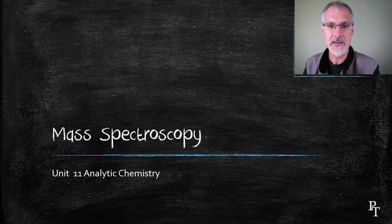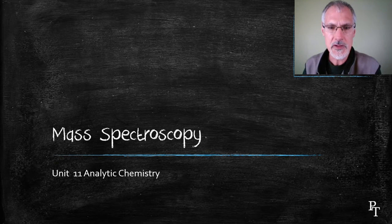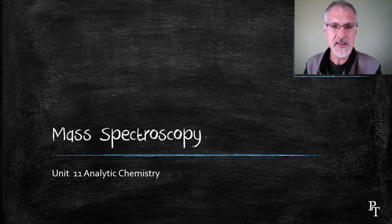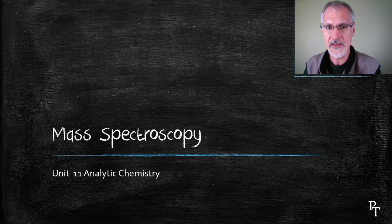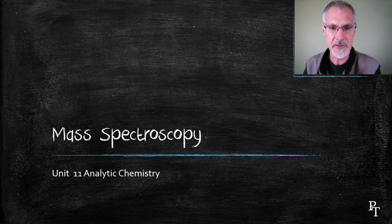Mass spectroscopy is something we looked at in unit number two when we were trying to determine a way of determining the abundance of various isotopes of naturally occurring elements. Now instead of using elements, we want to use it looking at compounds.